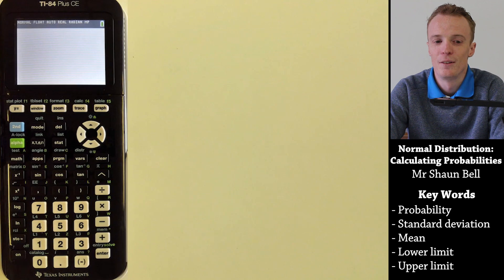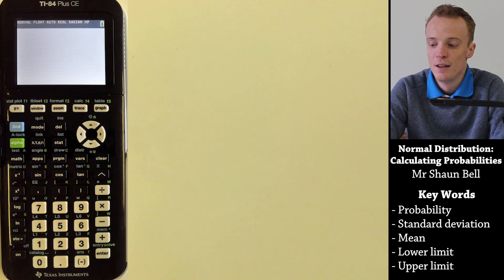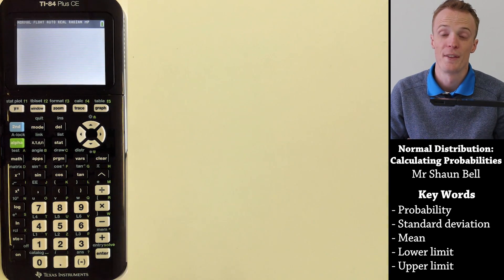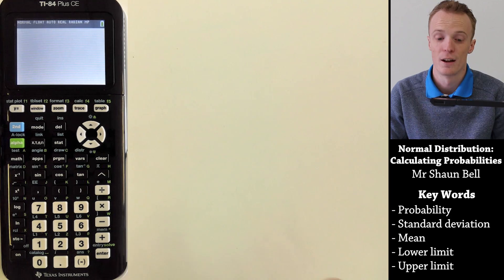This is a tutorial on how to use the Texas Instruments TI-84 Plus CE model of graphics calculator to find integral and non-integral probabilities of a normal distribution. First of all, let's quickly have a look at what that actually means in terms of our graph.